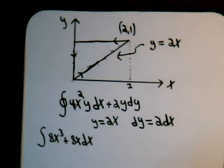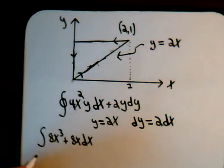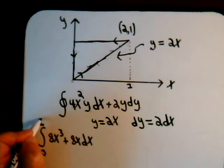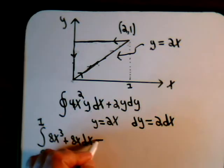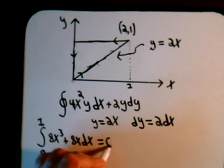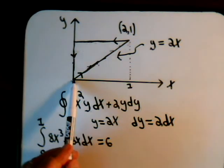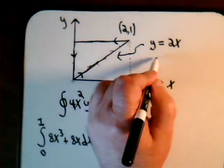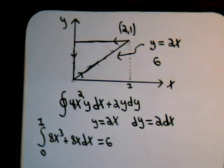x goes from 0 to 1. It's a straightforward integral. When we evaluate it, we get an answer of 6. So for that line segment, the line integral equals 6.